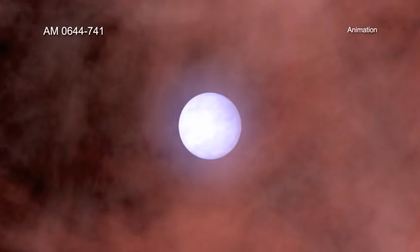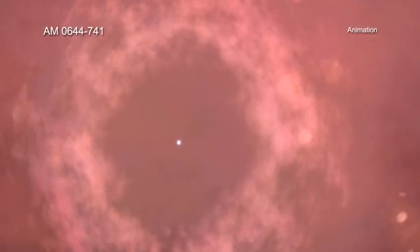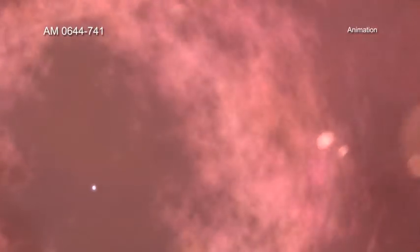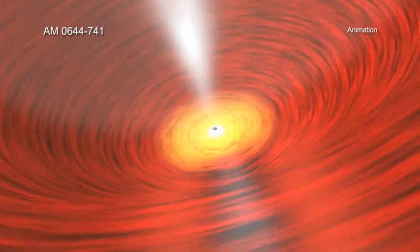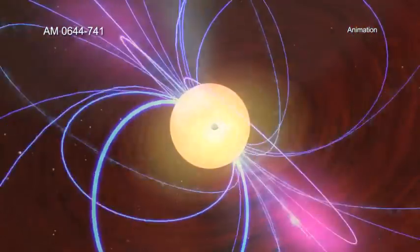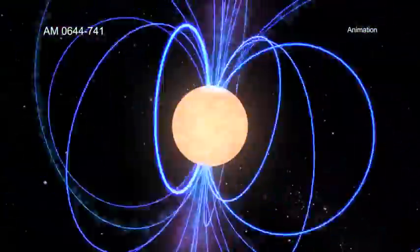The most massive of these fledgling stars will lead short lives in cosmic terms of millions of years. After that, their nuclear fuel is spent, and the stars explode as supernovas, leaving behind either black holes with masses less than about 100 times that of the Sun, or neutron stars with a mass approximately equal to 1.5 times the Sun.